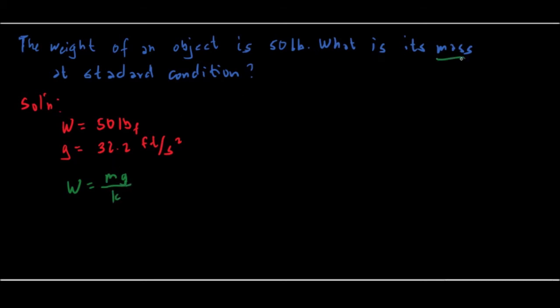Using our knowledge in algebra, we could transfer our terms to the other side, so we have mass is equal to weight times the constant over the acceleration due to gravity.